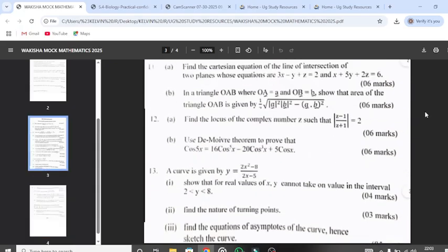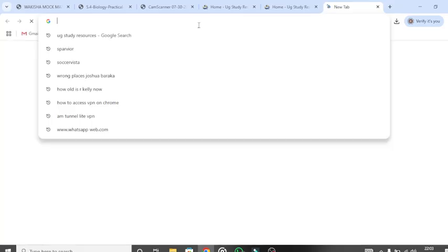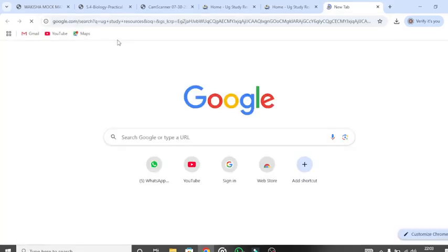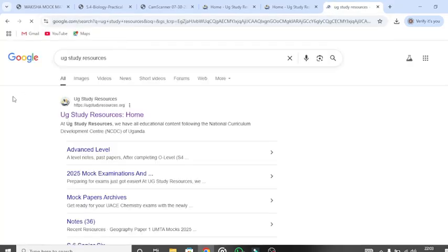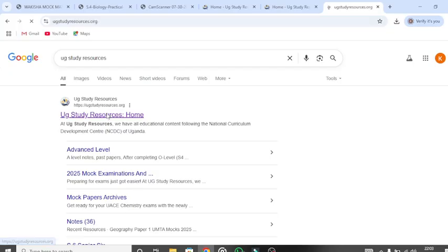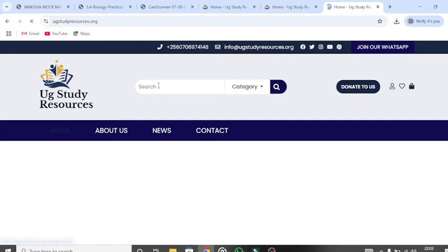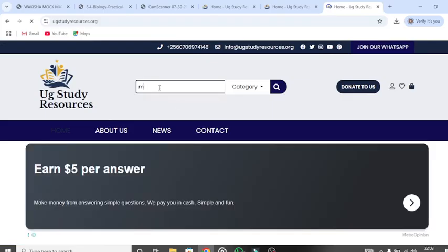If you want to get this paper, just go type in UG study resources on your Google browser. As you can see here, you just click on UG study resources. Here you just search for mathematics.